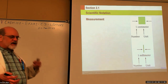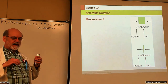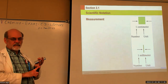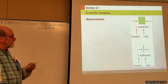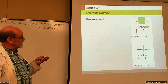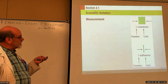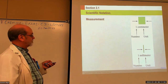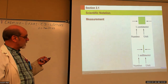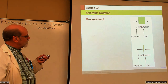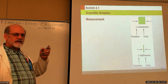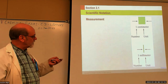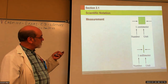When a measurement is made, 99% of the time it will include a number — which we call the scalar — and a unit. In this case our example is a centimeter, so this represents one centimeter. The unit of measure determines the magnitude of the measurement. For example, the centimeter is bigger than the millimeter.